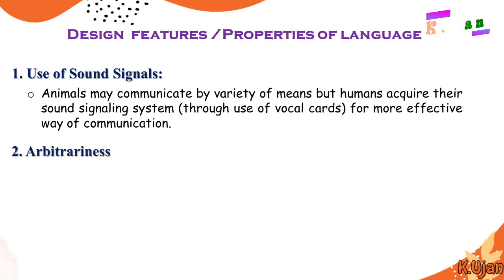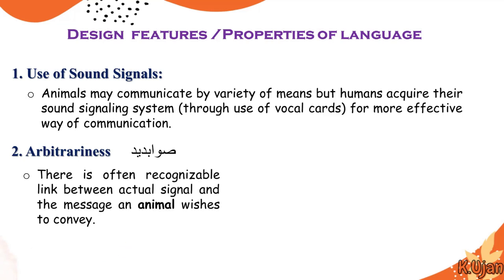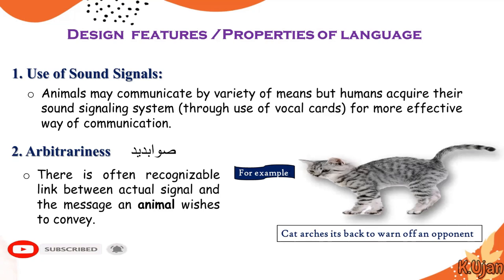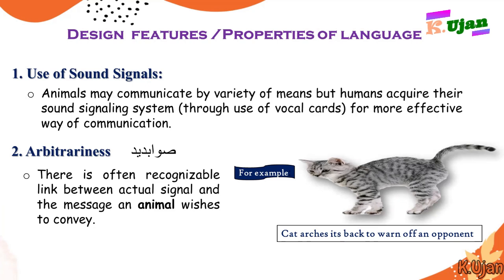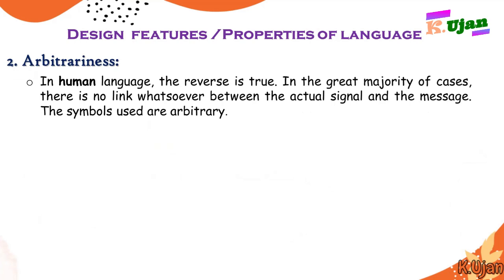Here is another property or design feature of language: arbitrariness — we may call this 'sawabadid' in Urdu or Hindi. In animal communication, there is often a recognizable link between the actual signal and the message the animal wishes to convey. For example, a cat arches its back to warn off an opponent. Animals usually make gestures for communicating or conveying their message, like this cat making an arc when it warns off an enemy.